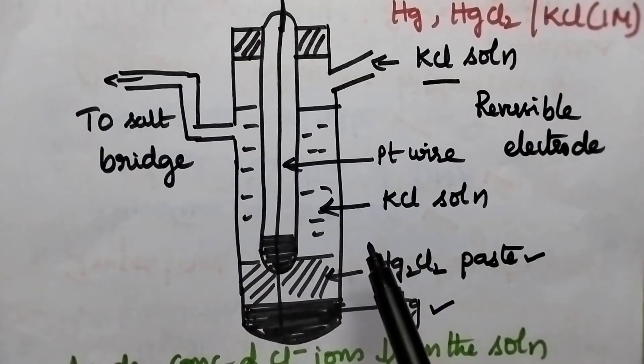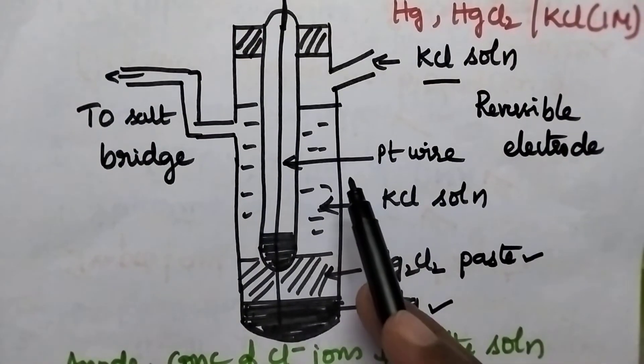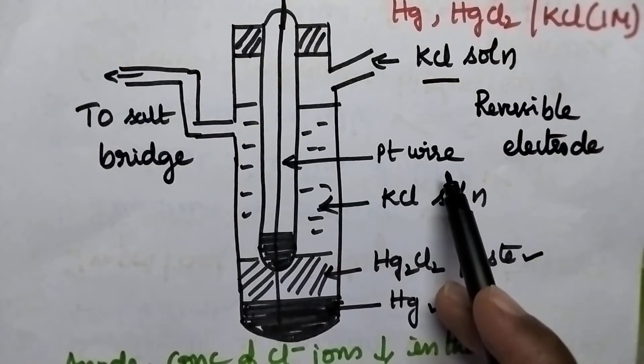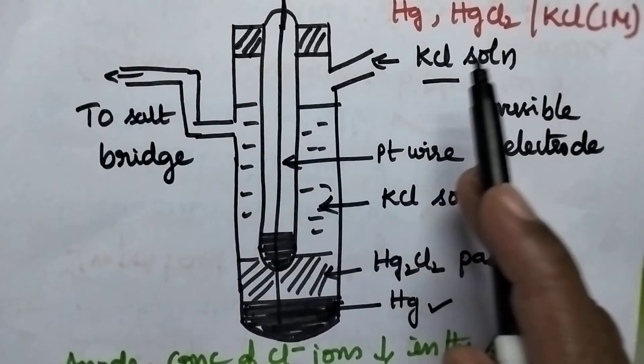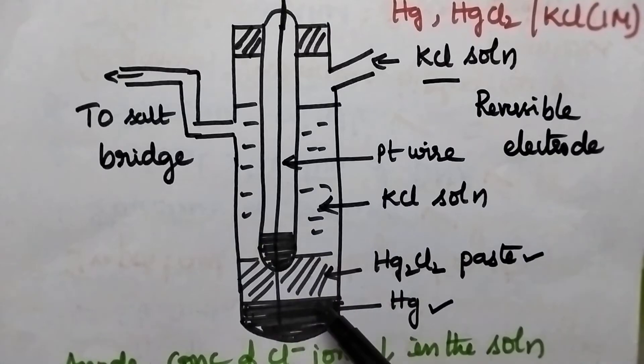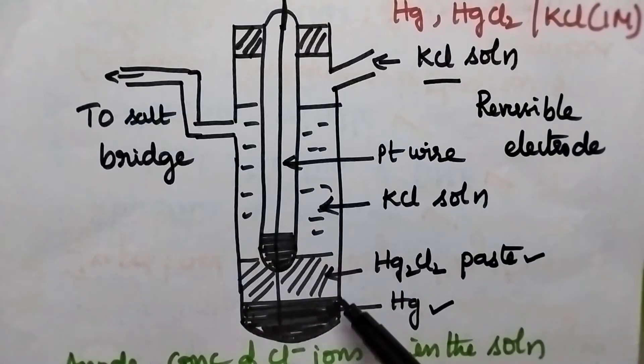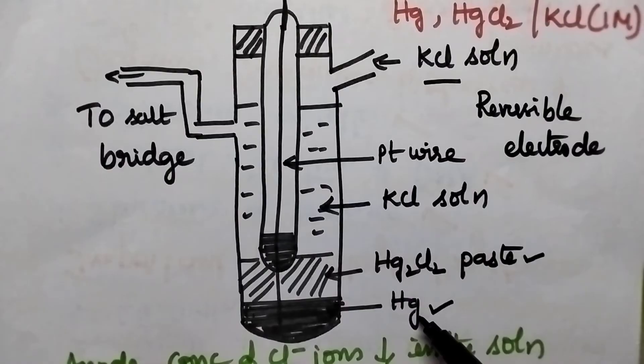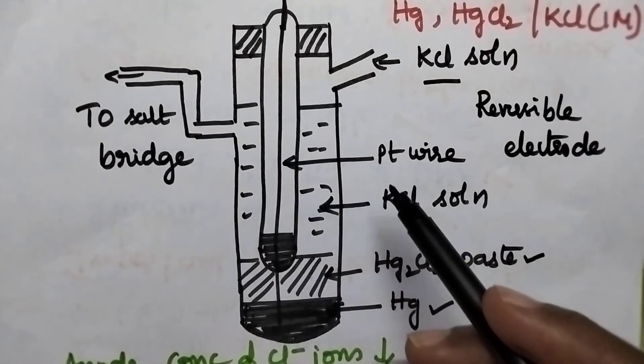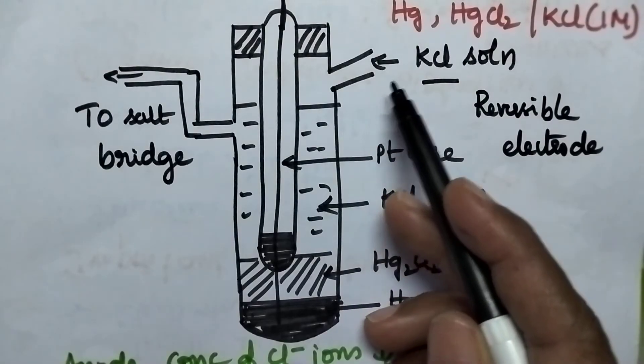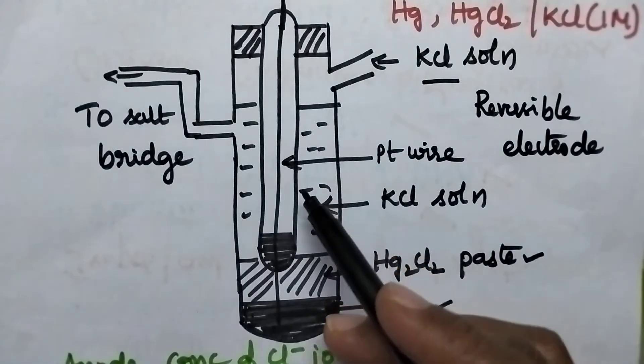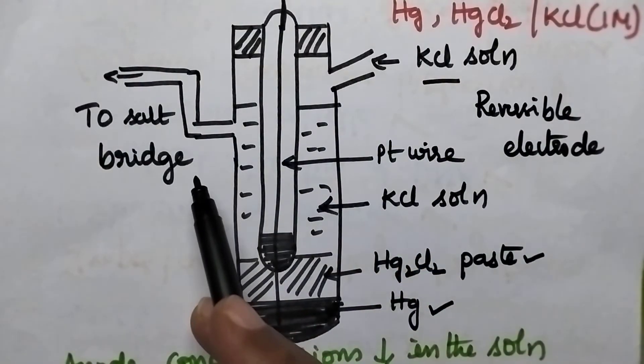Let us see the instrumentation. So generally, this calomel electrode consists of a long glass tube containing platinum wire which will act as an electrode and makes contact with the outer circuit, which is sealed in an inner glass tube. And always this large glass tube is filled with liquid mercury followed by mercurous chloride paste. And always through the inlet provided at its top, KCl solution will be poured into the glass tube.